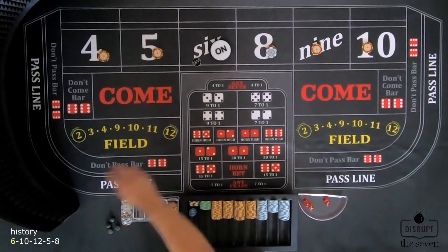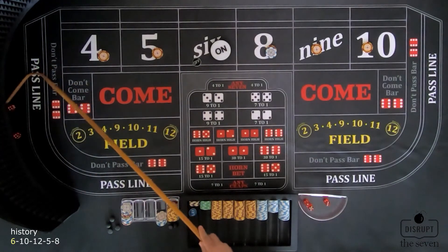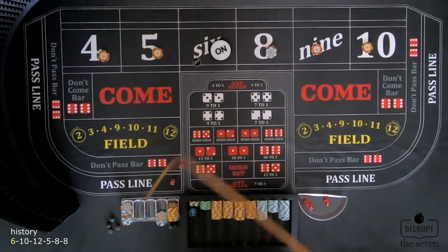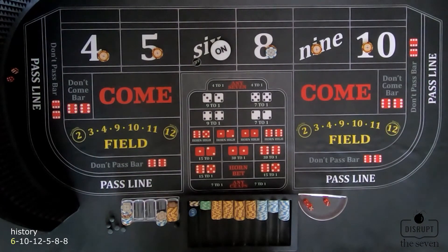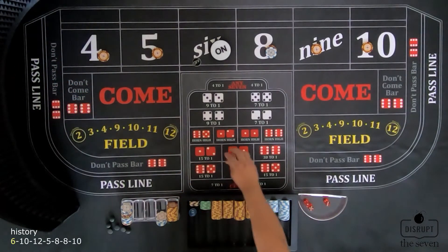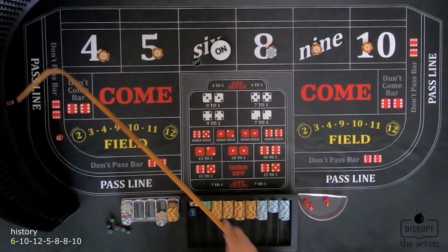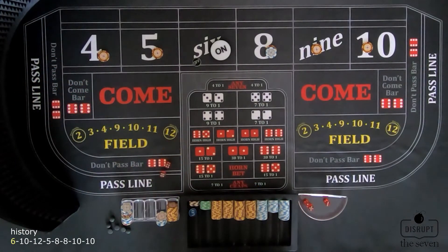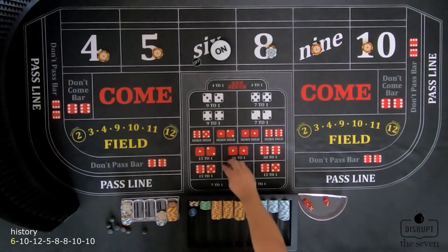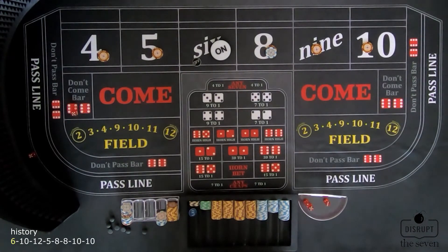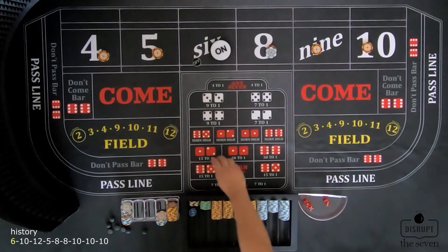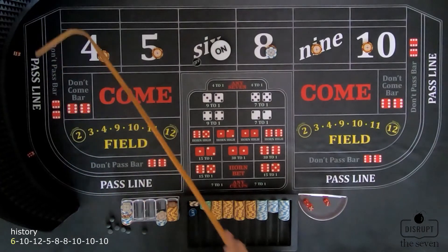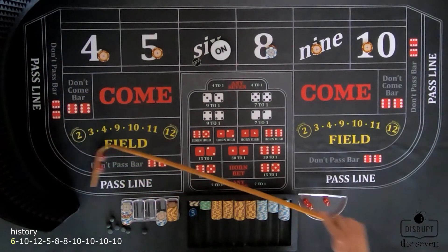Shooter takes the dice and shoots — 4-4, hard 8. Nothing happens. That's the fifth roll. Shooter throws — 6-4, easy 10. Nothing happens. That's the sixth roll. Shooter throws — 6-4, easy 10 again. Nothing happens. That's the seventh roll. Shooter tries again — 5-5, hard 10. Nothing happens to us. Then 6-4, easy 10 — shooter has back-to-back 10s. At this point you trust the shooter and tell the dealer you want our bets turned on. Eight rolls have passed so we want everything working.